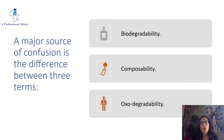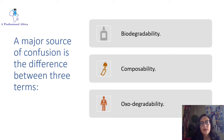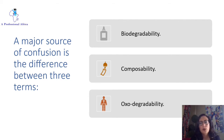Nearly every material will biodegrade given enough time, but the length of the biodegradation process is highly dependent on environmental parameters such as humidity and temperature. Simply claiming that a plastic is biodegradable is not enough. This video will walk you through the difference between these three terminologies.